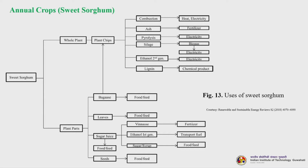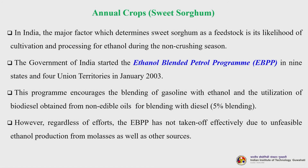Sweet sorghum can be made into various value-added products. The whole plant can be chipped for combustion — yielding ash for fertilizer — or pyrolysis, silage, second-generation ethanol, or lignin, which can be further converted to electricity, fertilizer, and platform chemicals. The bagasse, leaves, and juice can be converted to biofuels. Seeds go for food and feed purposes. Parts of the juice and leaves can be converted to fertilizer and transport fuel. Apart from other uses, sweet sorghum has enormous bioenergy potential.